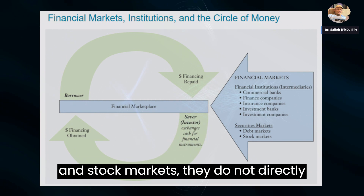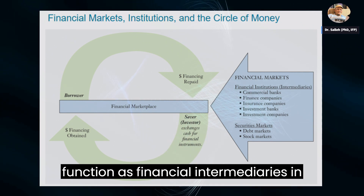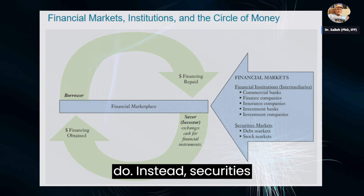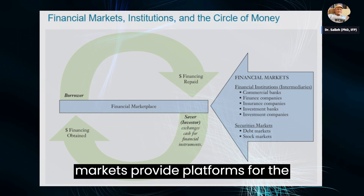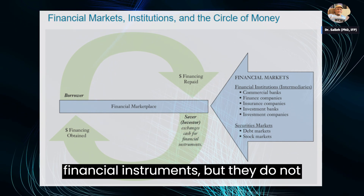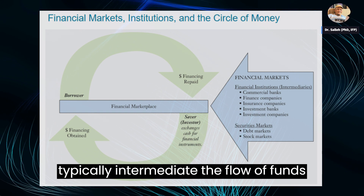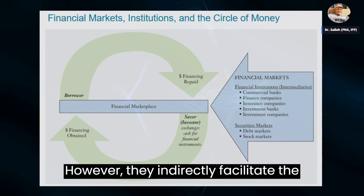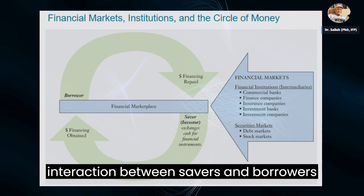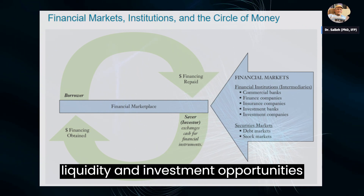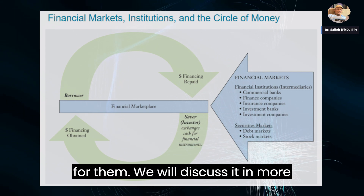As for securities markets, such as debt markets and stock markets, they do not directly function as financial intermediaries in the same way that financial institutions do. Instead, securities markets provide platforms for the issuance, trading, and exchange of financial instruments, but they do not typically intermediate the flow of funds between savers and borrowers themselves. However, they indirectly facilitate the interaction between savers and borrowers in financial markets by providing liquidity and investment opportunities for them.